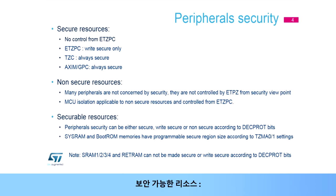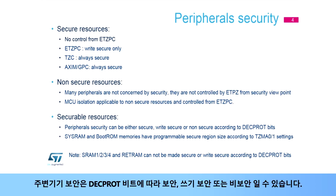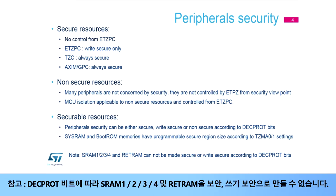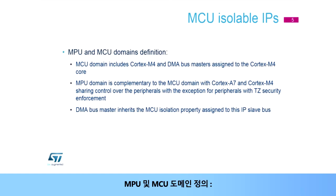Securable Resources: peripheral security can be either secure, write secure, or non-secure according to DECPROD bits. SysRAM and boot ROM memories have programmable secure region size according to TZMA0 and TZMA1 settings. Note: SRAM 1, 2, 3, and 4 and RETRAM cannot be made secure or write secure according to DECPROD bits.